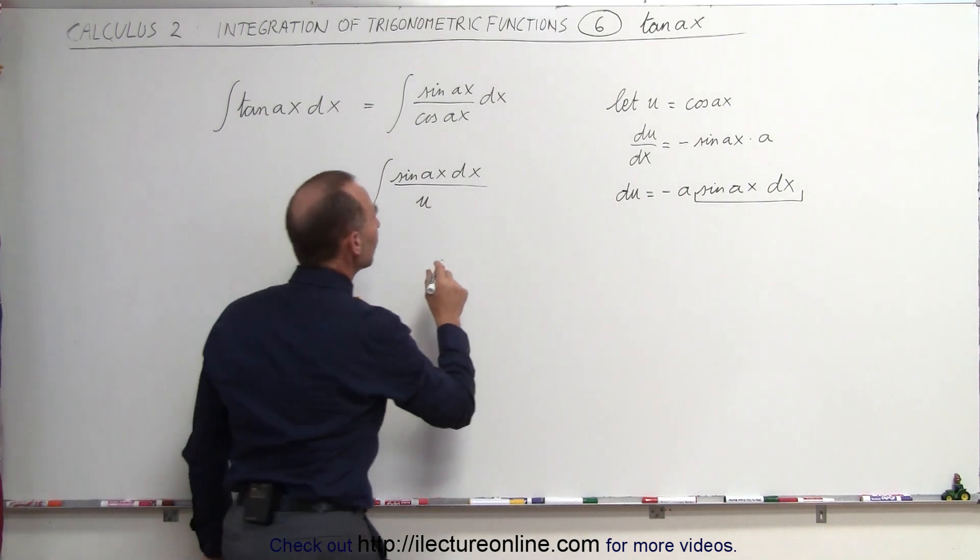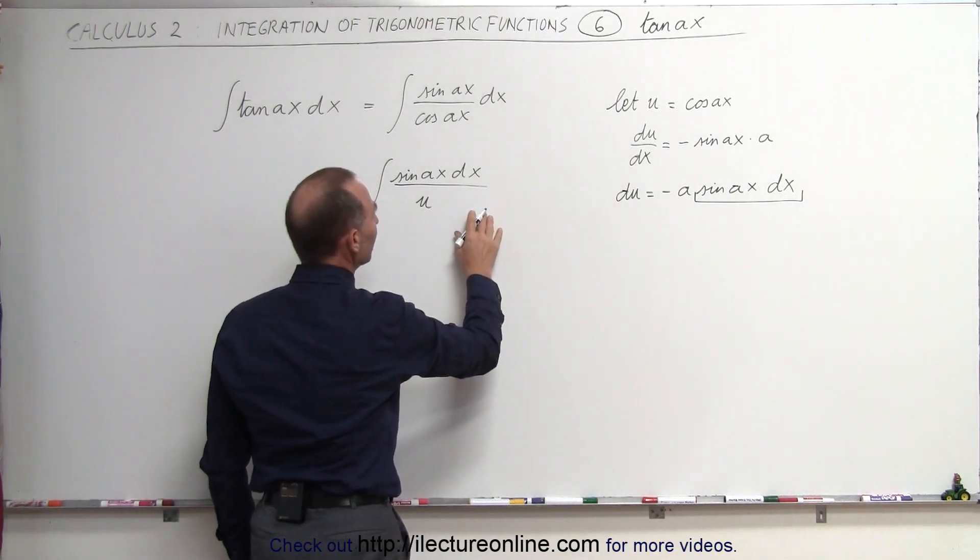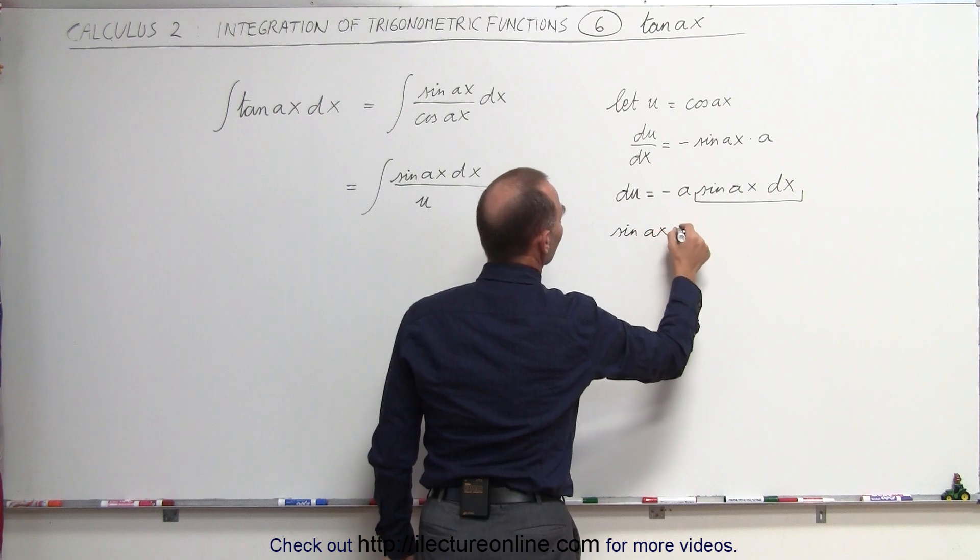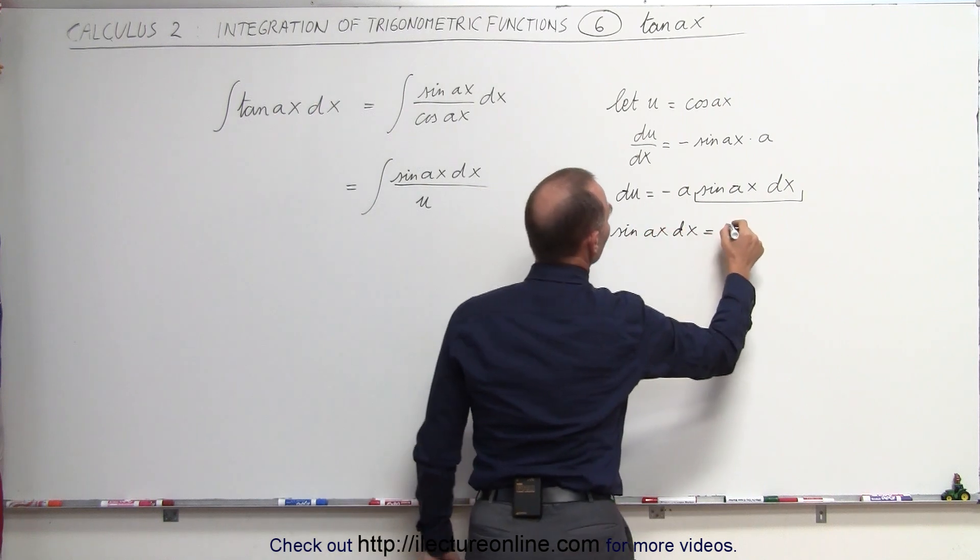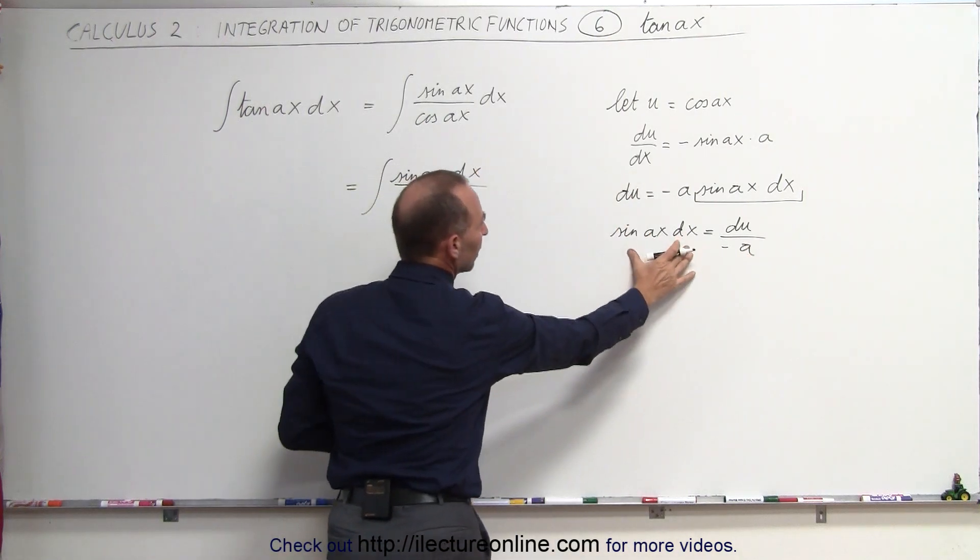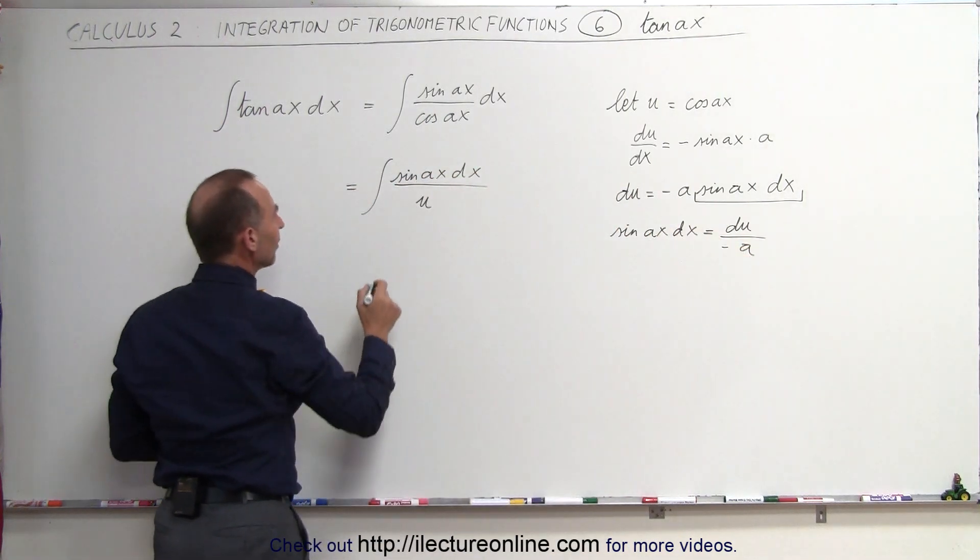All right, what we can then do is say that the sine of Ax dx can be written as du divided by minus A. So we're going to replace what's in the numerator by du over minus A.